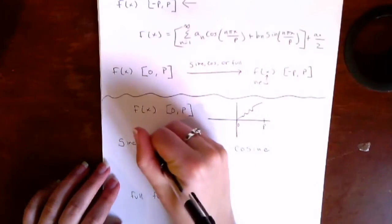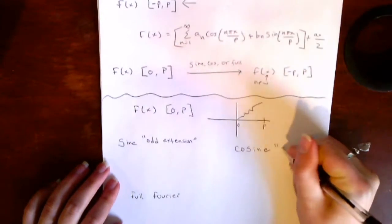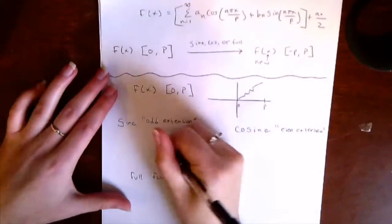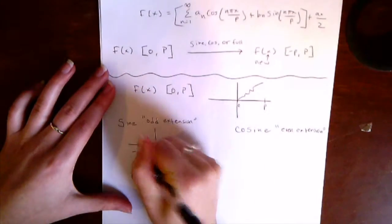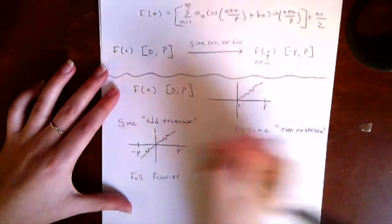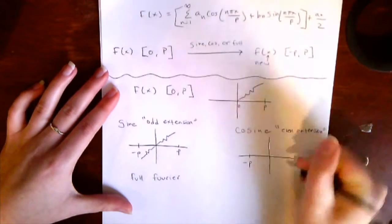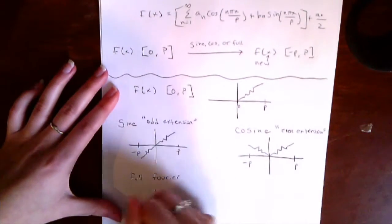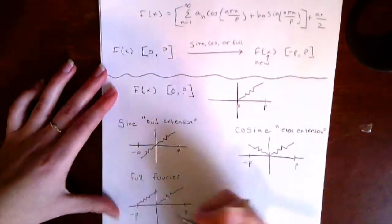This is why the sine and cosine extensions are also referred to as odd and even extensions. For a sine extension, you'll reflect the function across the origin. For a cosine extension, you'll reflect the function across the y-axis. And for a full Fourier extension, you will make a repeat of the function in the quadrant next to it.